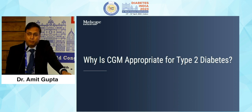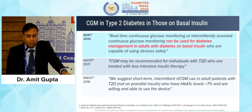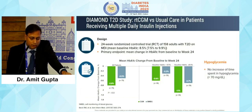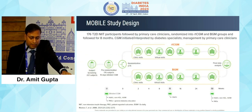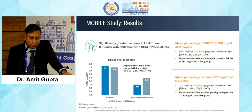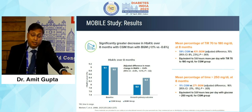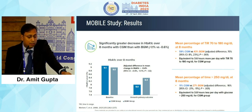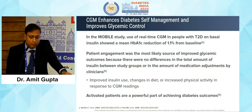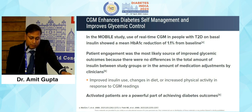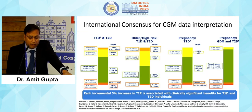CGM is appropriate for type 2 diabetes beyond just insulin users. The DIAMOND and MOBILE studies are important — particularly the MOBILE study, done on type 2 diabetes patients, which showed a significant decrease in HbA1c levels as well as hypoglycemic events in CGM users. CGM enhances diabetes self-management and patient engagement is more effective with CGM whether patients are on insulin or not.